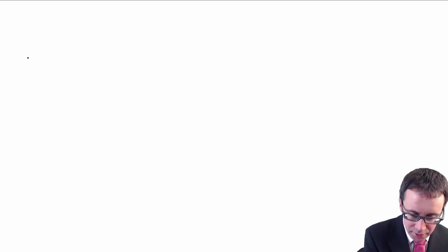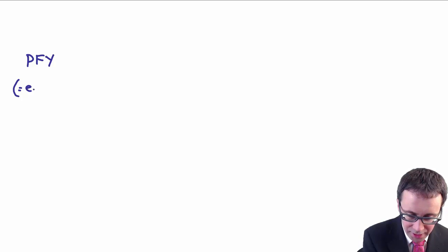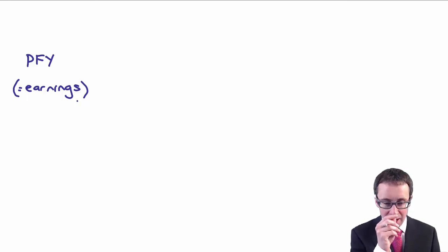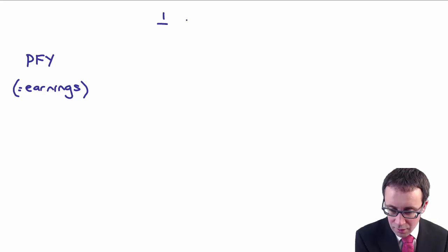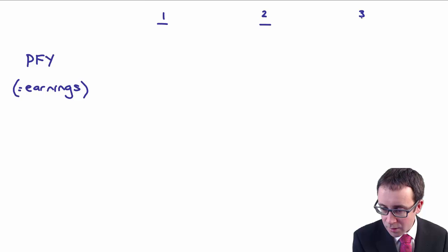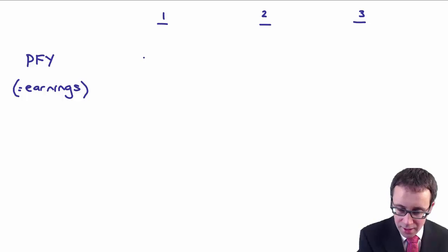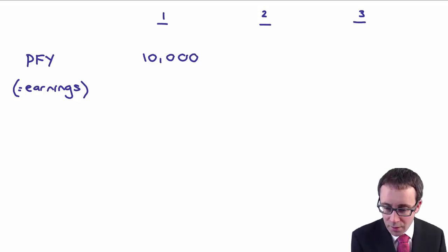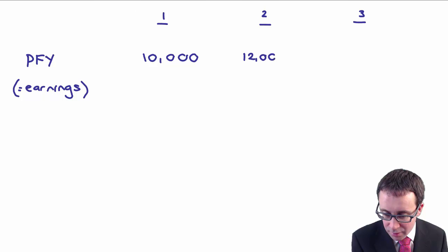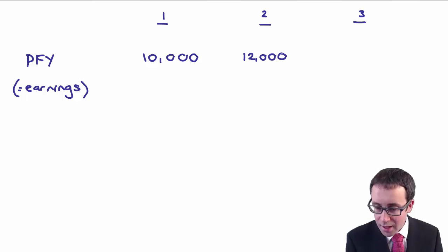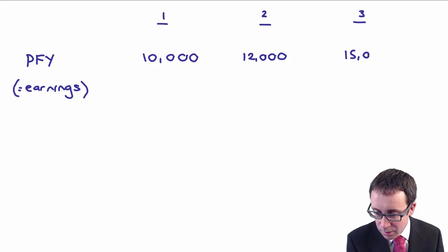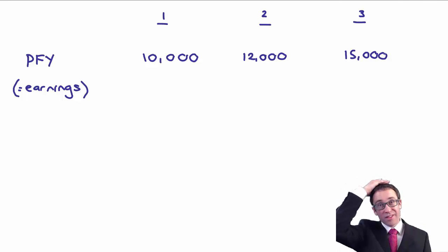Profit for the year is exactly the same as your earnings. If we look at those earnings for three years — years one, two and three — in the first year we make profits of 10,000; in the second year, 12,000; and in the third year, 15,000.